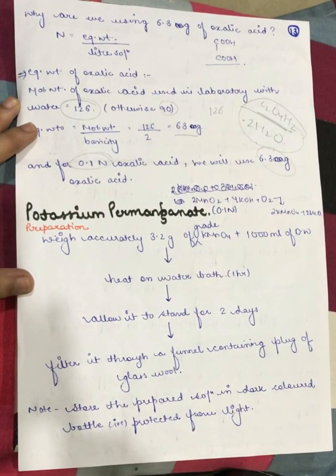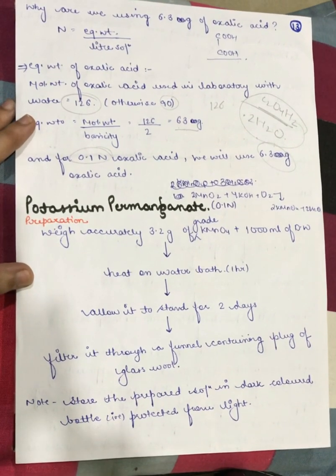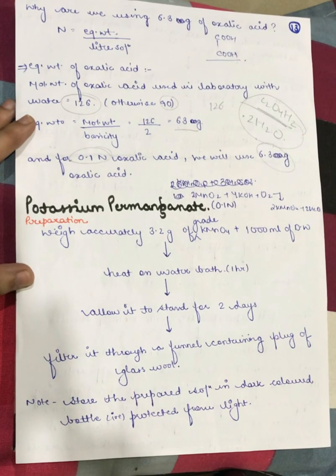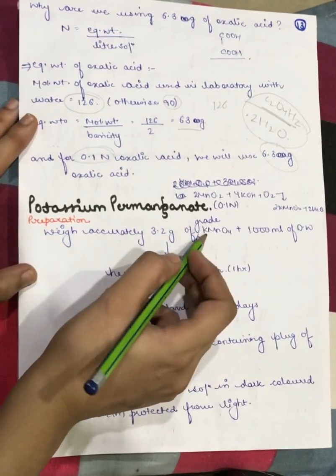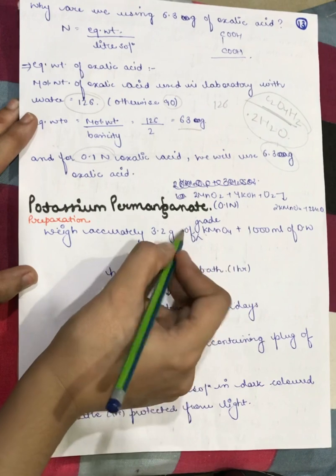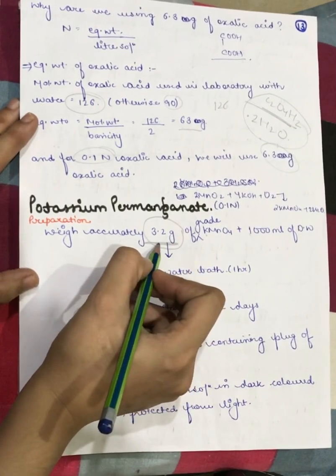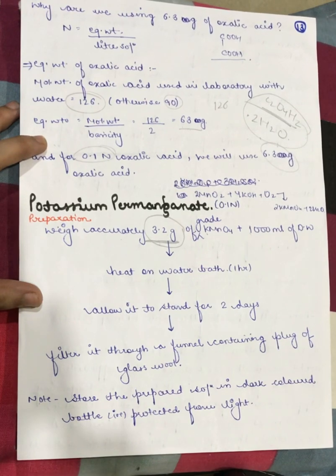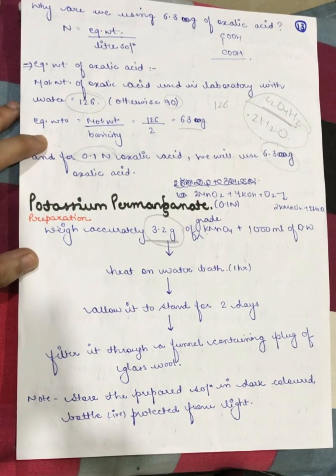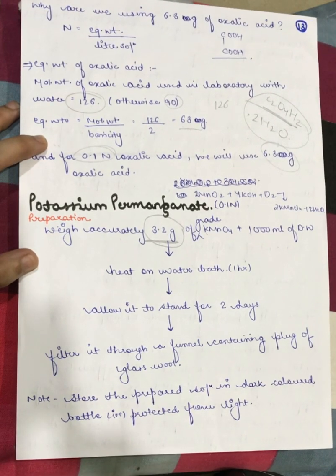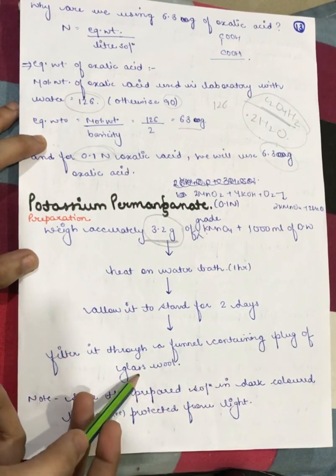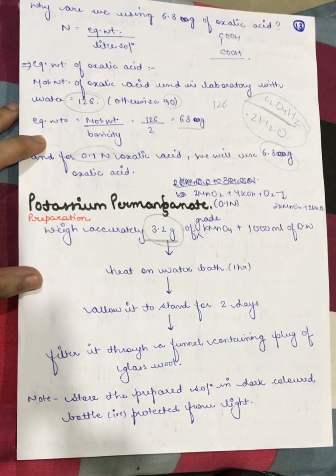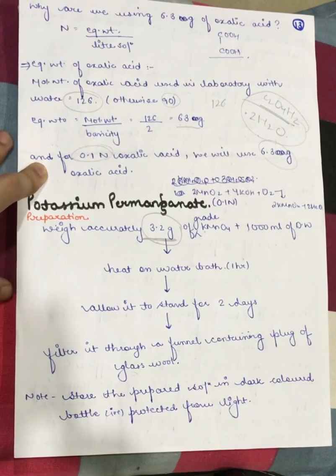Next, we have the standardization and preparation of potassium permanganate, which is a widely used oxidizing agent. We calculate 3.2 grams of potassium permanganate. We heat it on a water bath for 1 hour and allow it to stand for 2 days. Then we filter it using a funnel containing a plug of glass wool. The prepared solution is stored in a dark-colored (amber) bottle, because potassium permanganate has a tendency to react with light.